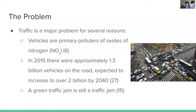The major problem we're trying to address is traffic. Vehicles are primary polluters of not only carbon dioxide but oxides of nitrogen, which cause acid rain. In 2015 there were approximately 1.3 billion vehicles on the road, and that's expected to almost double in the coming decades. Aside from congestion and pollution, even if we move to an economy with electric vehicles, a green traffic jam is still a traffic jam.